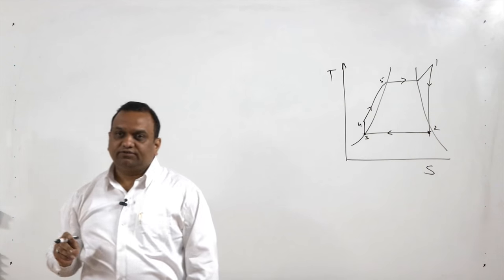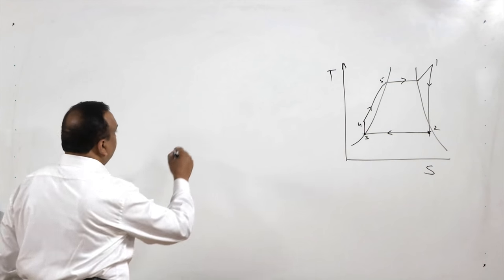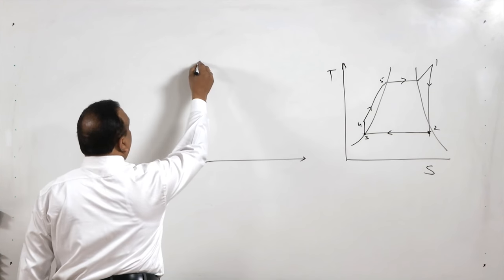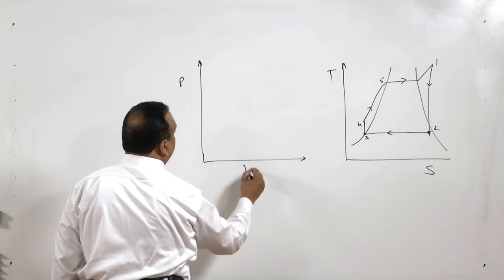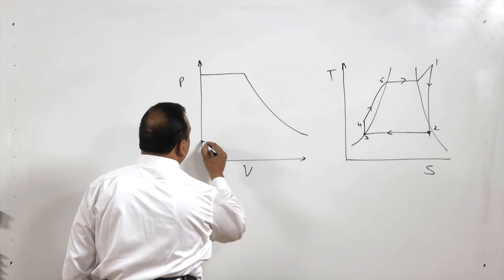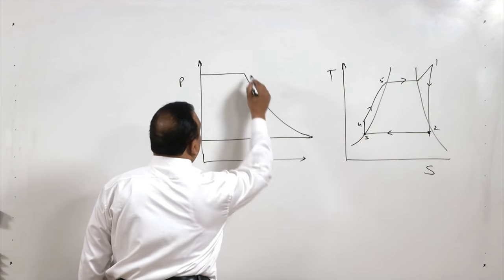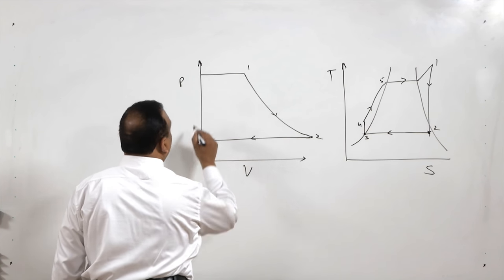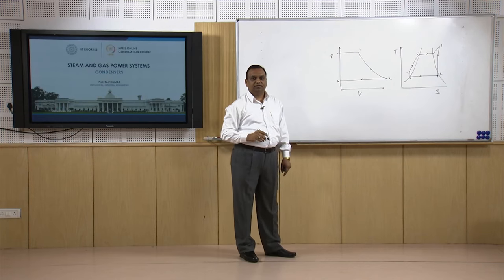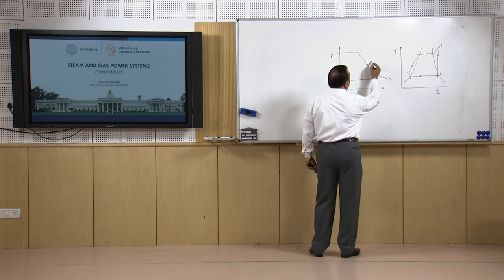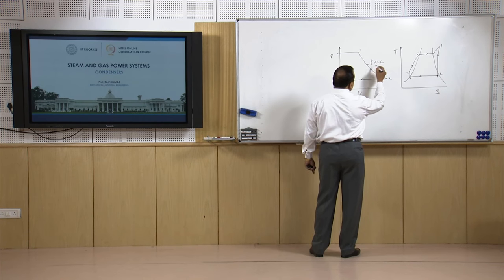For steam power generation there are two devices: one is the steam turbine and another is the steam engine. If we draw the PV diagram of a steam engine, it looks like this — state 1 to state 2, 2 to 3, and 3 to 0. The ideal PV diagram for a steam engine shows PV equal to constant, or PV raised to the power 1.1 equal to constant.